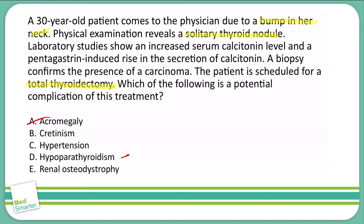B — cretinism. Cretinism is a hypothyroidism, but it's a hypothyroidism of a fetus. This is going to be due to problems with the thyroid functioning and developing. It's not going to be something a 30-year-old patient will develop due to a cancer. So cretinism is not going to be a good option here either.